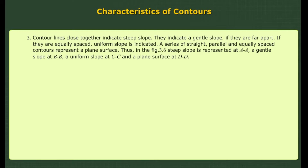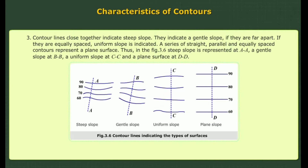3. Contour lines close together indicate steep slope; they indicate a gentle slope if they are far apart. If they are equally spaced, uniform slope is indicated. A series of straight, parallel and equally spaced contours represent a plain surface. Thus, in figure 3.6, steep slope is represented at A, a gentle slope at B, a uniform slope at C, and a plain surface at D.